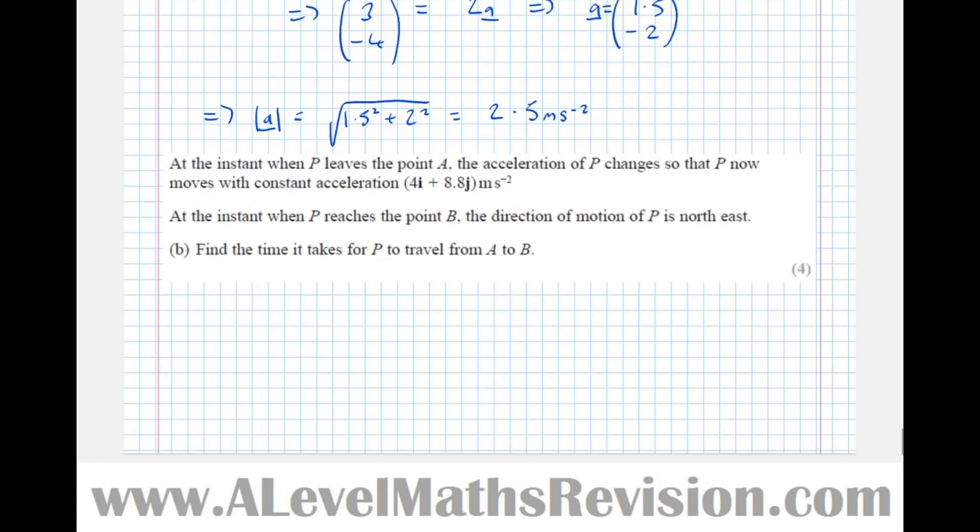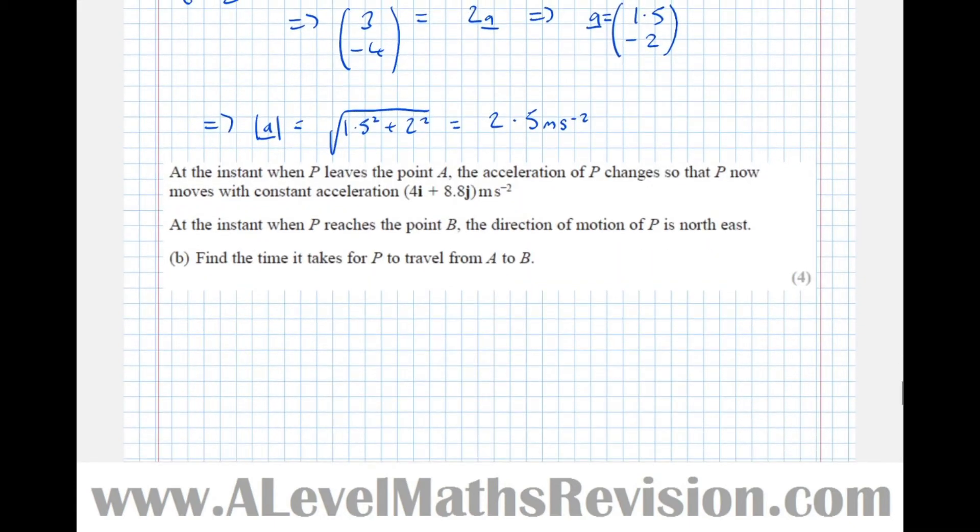So the next part says, at the instant when P leaves point A, the acceleration of P changes, so that P now moves with constant acceleration 4i plus 8.8j. At the instant when P reaches point B, the direction of motion of P is north-east. Find the time it takes for P to travel from A to B.